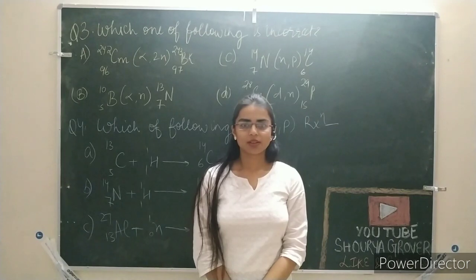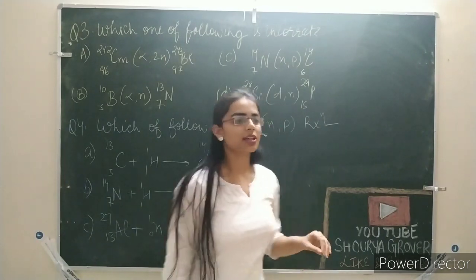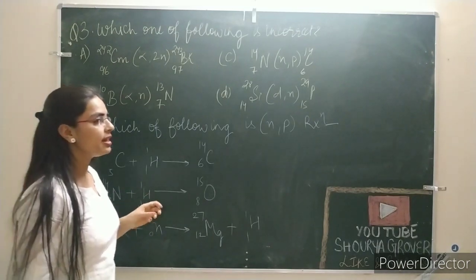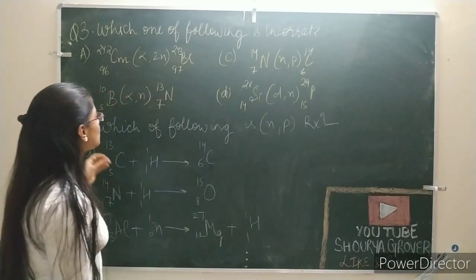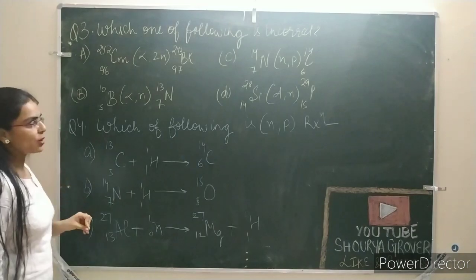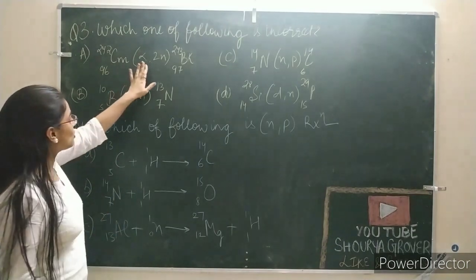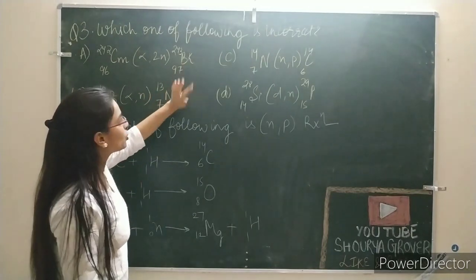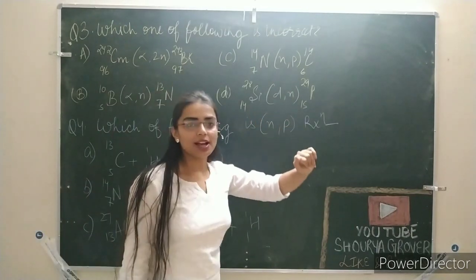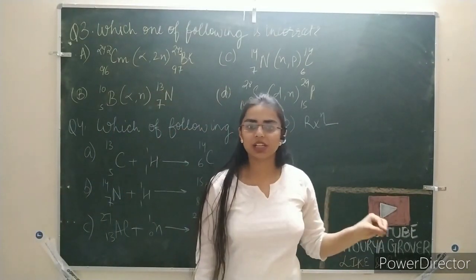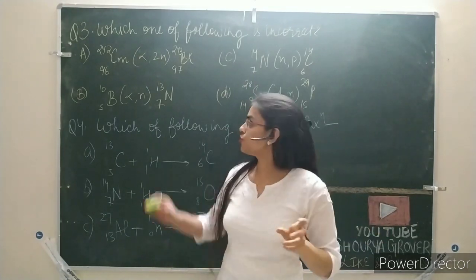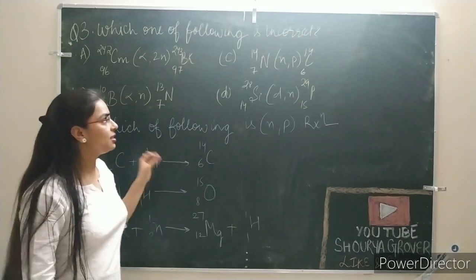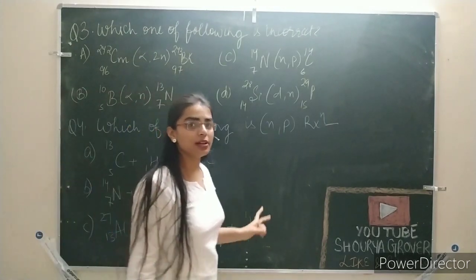Let's move on to question number 3: which one of the following is incorrect? There are 4 options. In this reaction, you can identify the bombarding and emitted particles, and check the product. Question number 3 is your homework — you have to solve it and in my comment box write question 3 with your option: A, B, C, or D. Which one is correct?